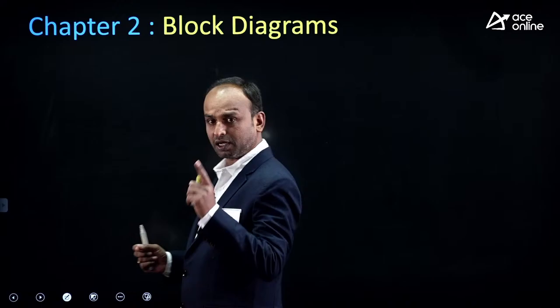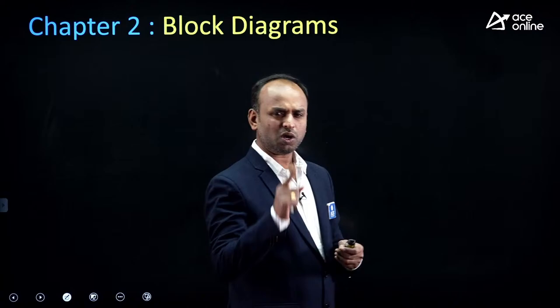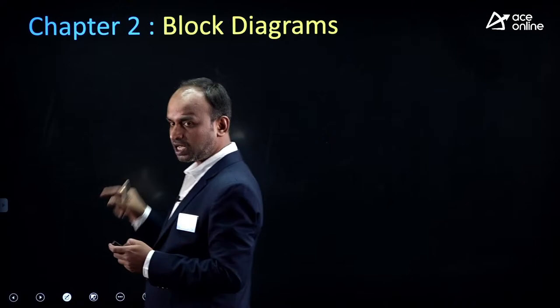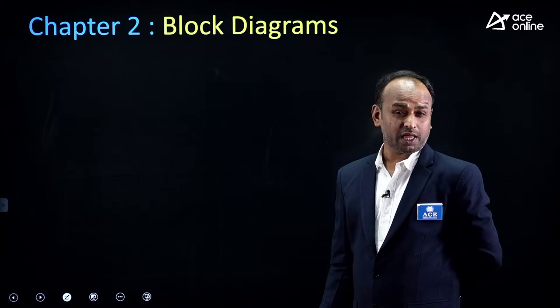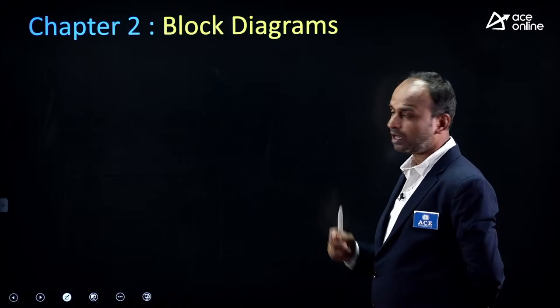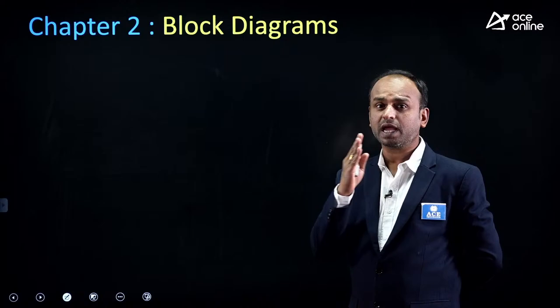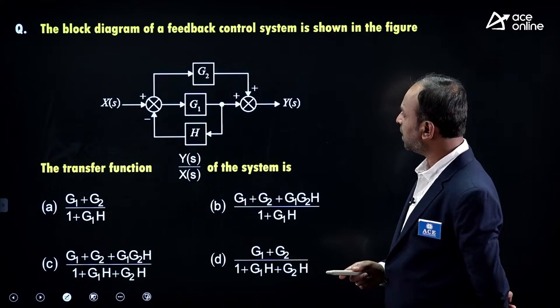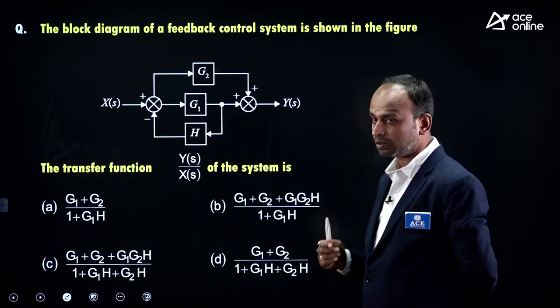Next chapter: Block Diagrams. We use Mason's Gain formula — one formula covers everything. The major purpose of block diagrams is to find the overall gain of the system. Question: The block diagram of a control system is shown. Find the transfer function Y(s)/X(s).